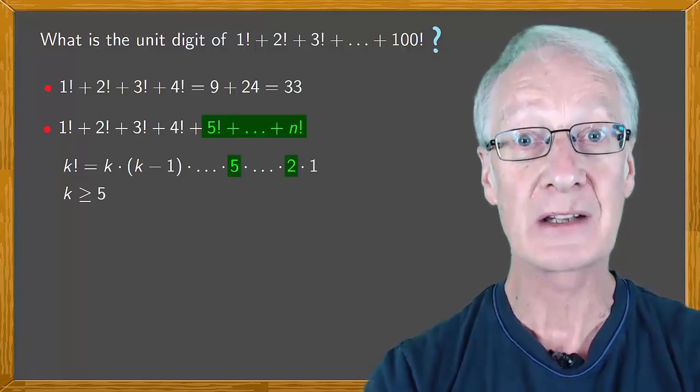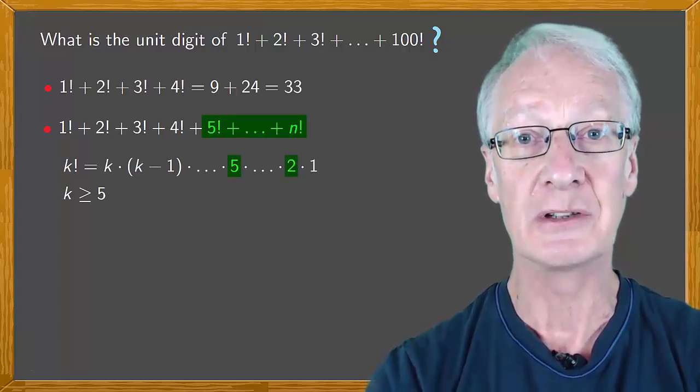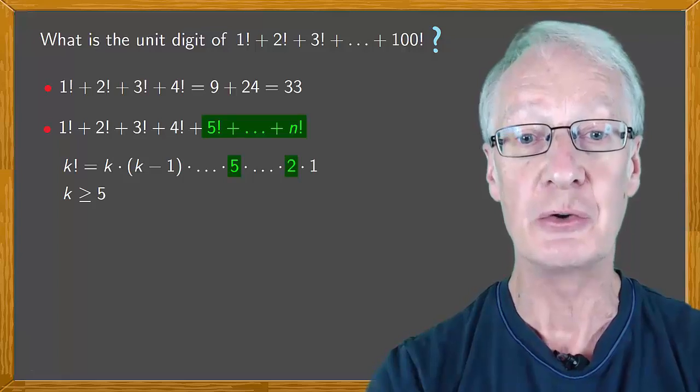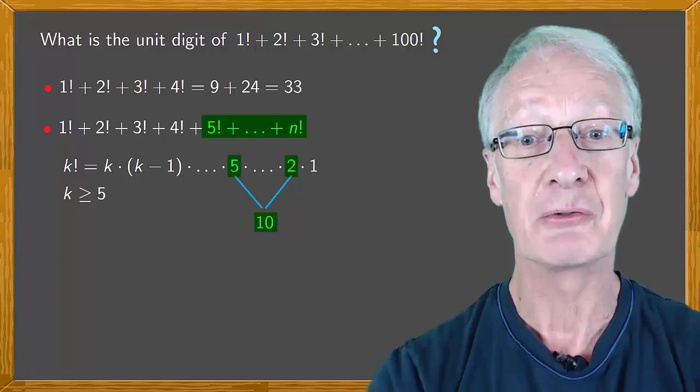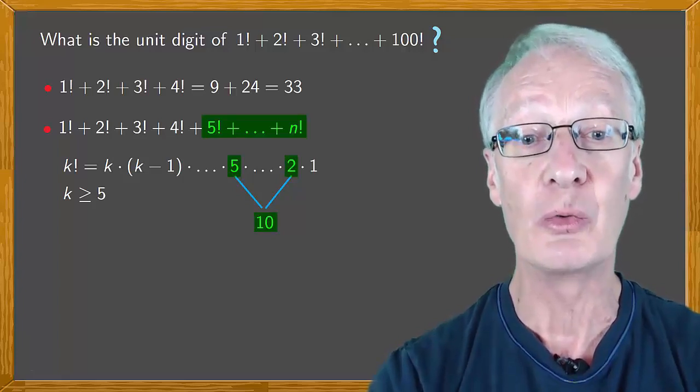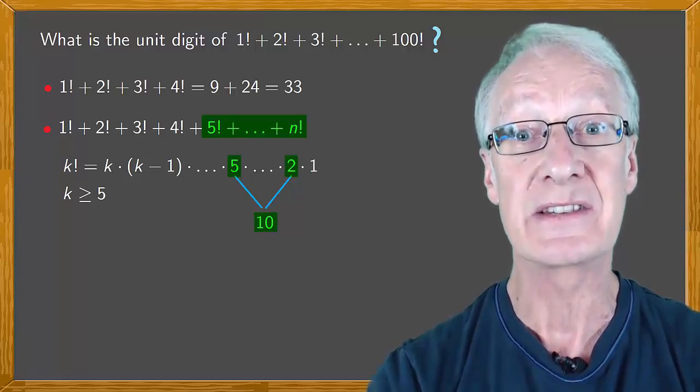So among the factors of k! are 5 and 2, which when multiplied gives 10. So the result of the operation will always end in zero.